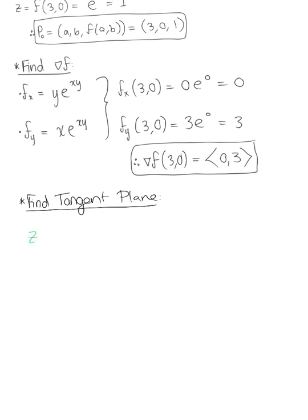So as always we'll keep in mind here that z is defined as the partial derivative with respect to x at that point a, b multiplied by x minus a plus the partial derivative of the function with respect to y at the point a, b multiplied by y minus b plus our surface f evaluated at the point a, b.